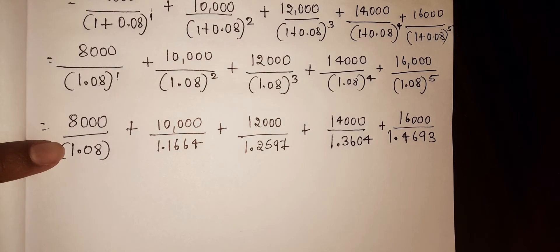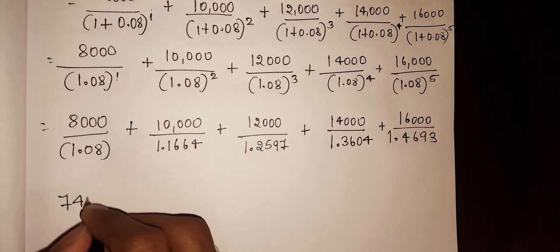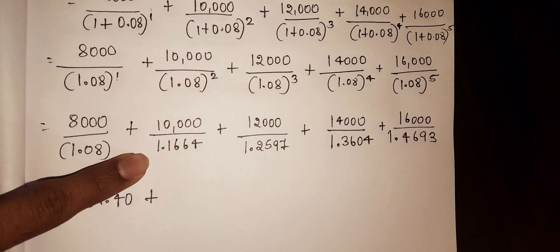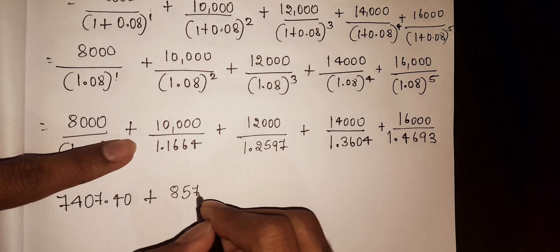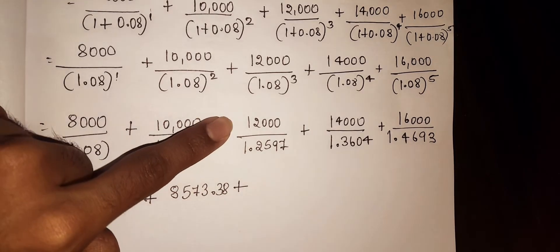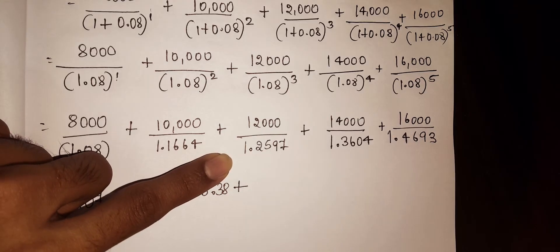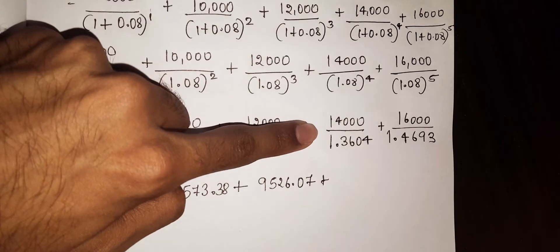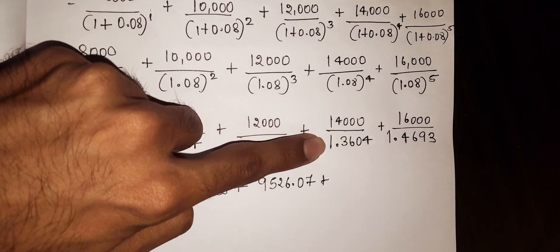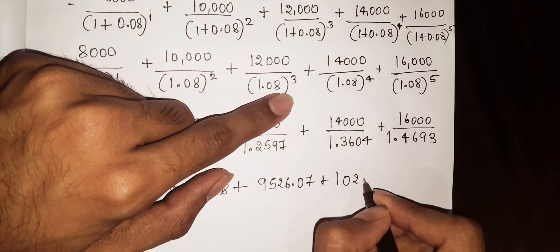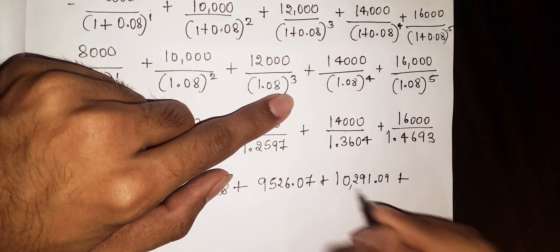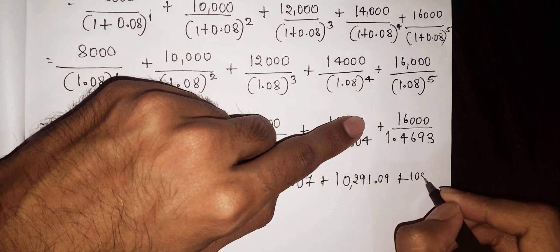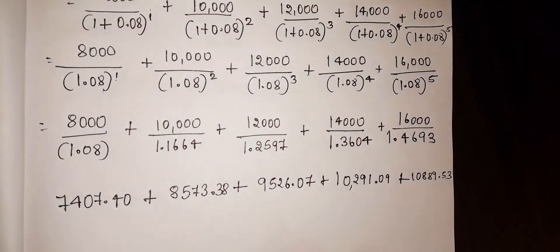Now dividing: 8,000 divided by 1.08 gives 7,407.40. Plus 10,000 divided by 1.1664 gives 8,573.38. Plus 12,000 divided by 1.2597 gives 9,526.07. Plus 14,000 divided by 1.3604 gives 10,291.09. Plus 16,000 divided by 1.4693 gives 10,889.53.